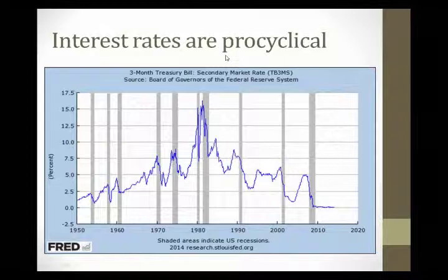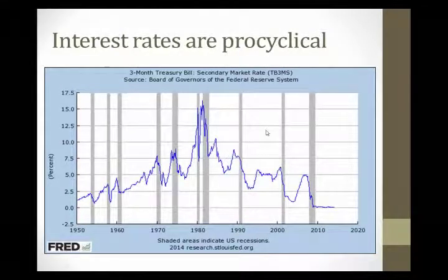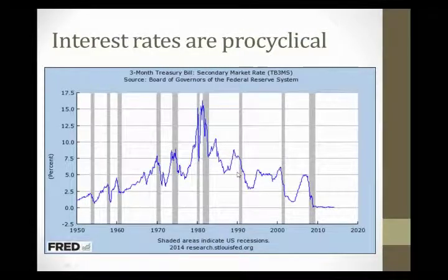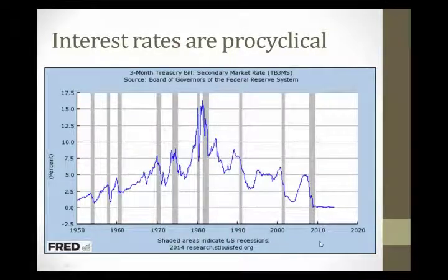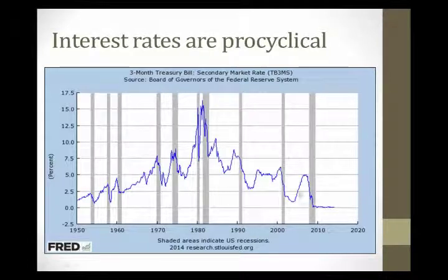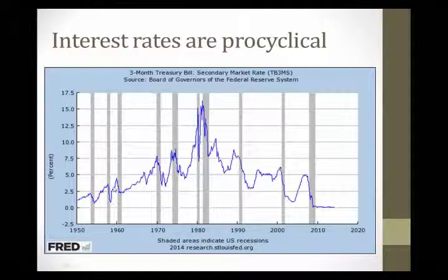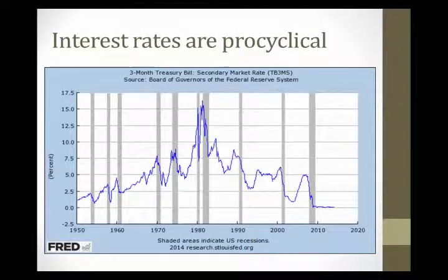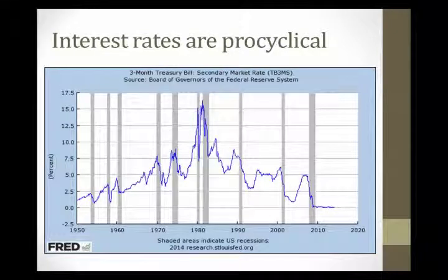Putting that together, interest rates are pro-cyclical: they fall during recessions and rise during expansions. For the most part, this is what the data shows. We have recessions at 81–82, 90–91, 2001, and 2007 to 2009 — shown in shaded boxes — and we see the interest rate falls in each. During long expansions, we see interest rates rising. So for the most part, interest rates are pro-cyclical: they move with the business cycle, rising during economic expansion and falling during recession.